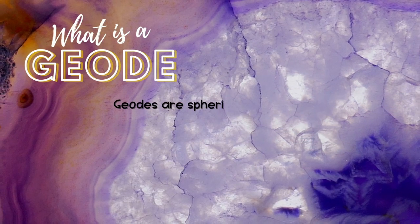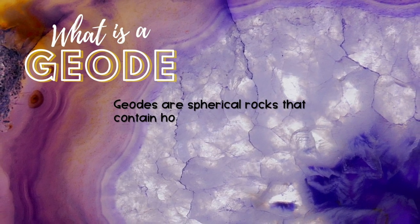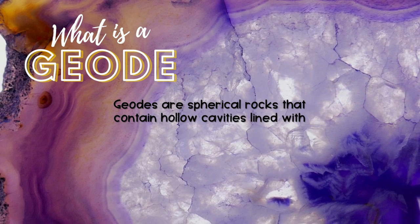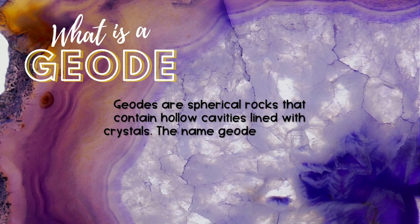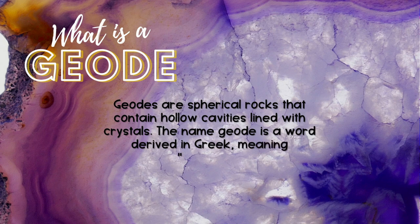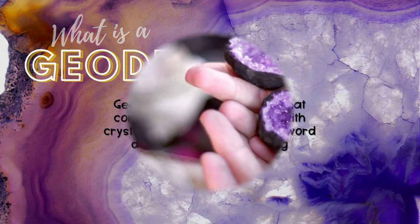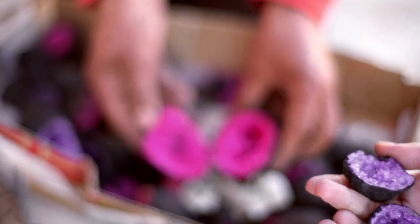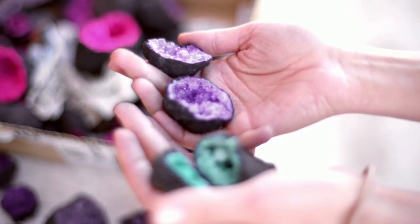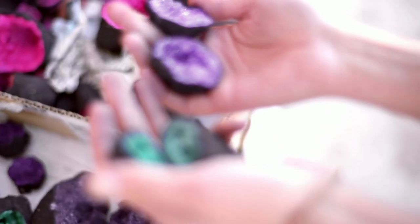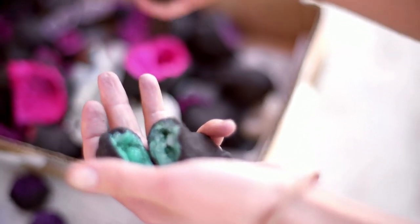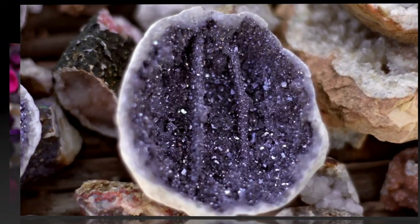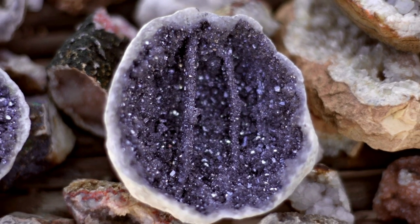What is a geode? Geodes are spherical rocks that contain hollow cavities lined with crystals. The name geode is a word derived in Greek meaning earth-like. Geodes are absolutely irresistible — they fill display cases and museums everywhere. It's hard to deny the allure of a rock that is rugged and weathered on the outside, yet so sparkly, stunning, and colorful on the inside.